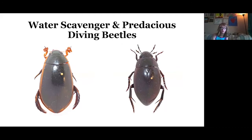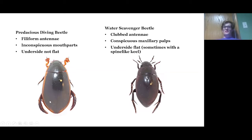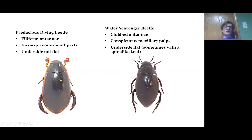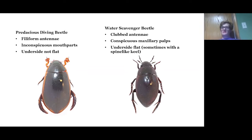The diving beetle is the orange one and the water scavenger is the black one. The predacious diving beetle is on the left with a yellowish border and green body; the water scavenger beetle is on the right. Predacious diving beetles will have filiform, or thread-like, antennae and indistinct maxillary palps, whereas the maxillary palps on the water scavenger beetle are very obvious. The underside of the diving beetle is not flat — it's slightly convex — while the water scavenger beetle will have a flat underside, sometimes with a spine-shaped keel.